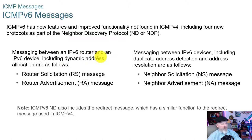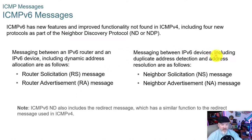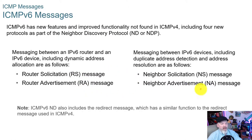Messaging between an IPv6 router and a v6 device, including dynamic address allocation, uses router solicitation and router advertisement messages. Messaging between v6 devices, including duplicate address detection and address resolution, uses neighbor solicitation (NS) and neighbor advertisement (NA) messages. ICMPv6 ND also includes the redirect message, which has a similar function to the redirect message used in ICMPv4.